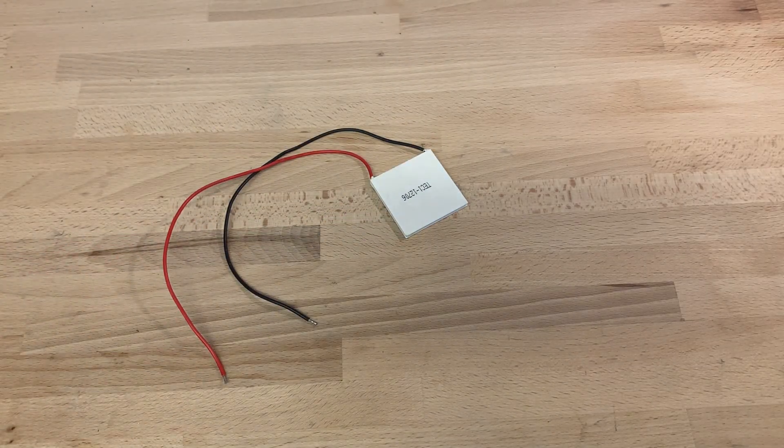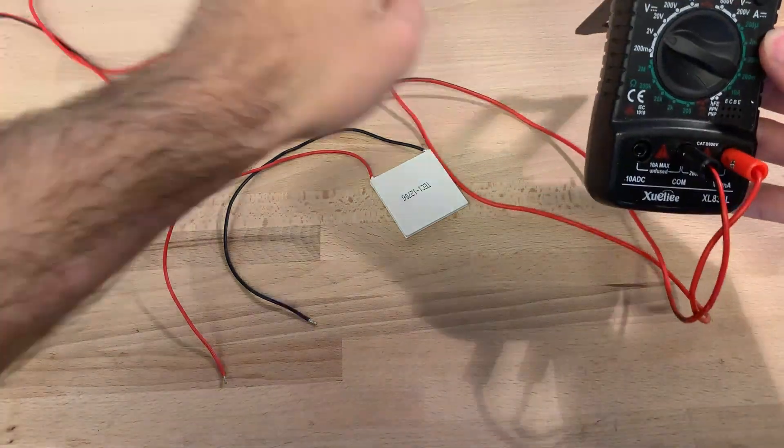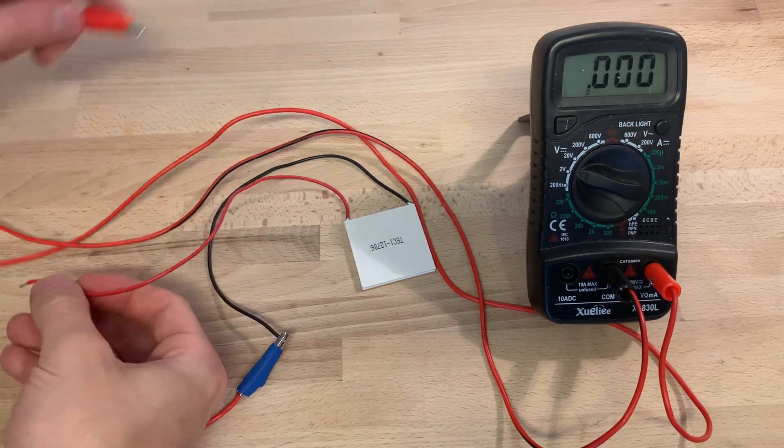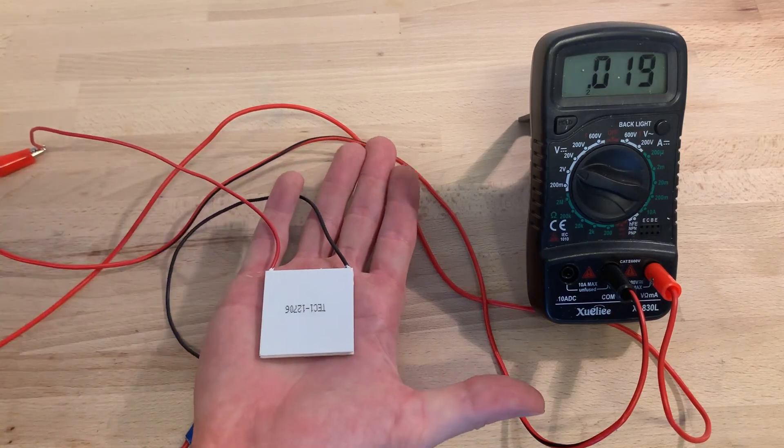I have already used Peltier elements in two previous projects. When you apply a voltage across the element, one side cools down and the other heats up. This effect also works in reverse. So if you apply heat to one side and cool the other down, we can measure a voltage across the element.